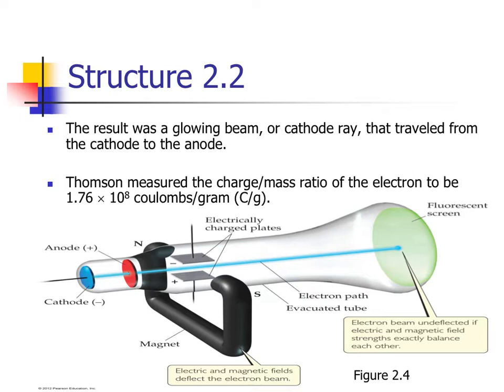What he did was use a cathode ray tube. Cathode ray tubes are very commonly found in televisions, or CRT computer monitors. We have a cathode and anode, it's electric currents passing through the magnet part, which helps focus the rays. He was able to measure the charge-to-mass ratio of the electron, which is kind of a big deal.